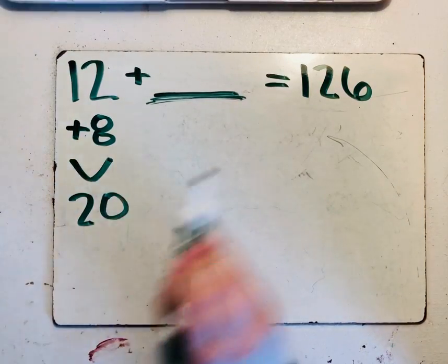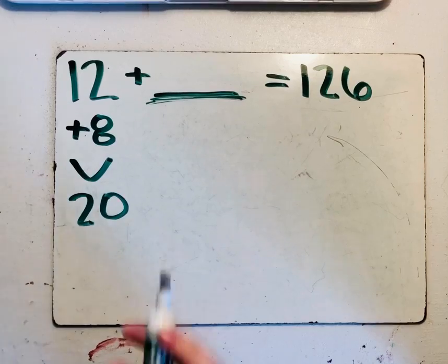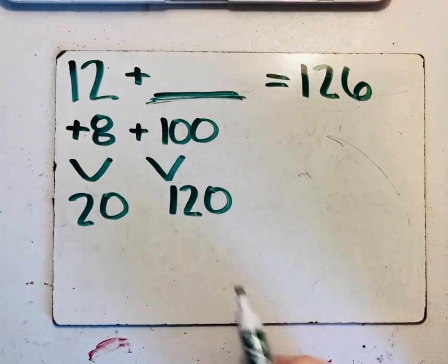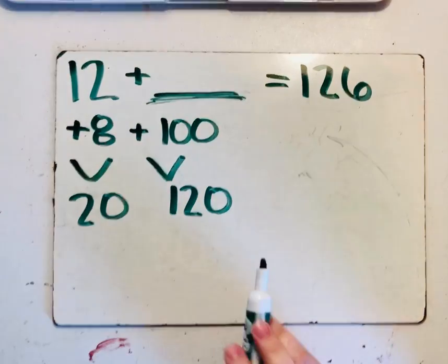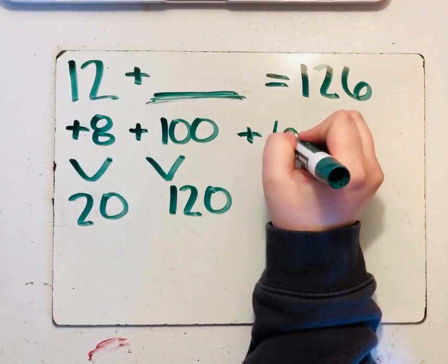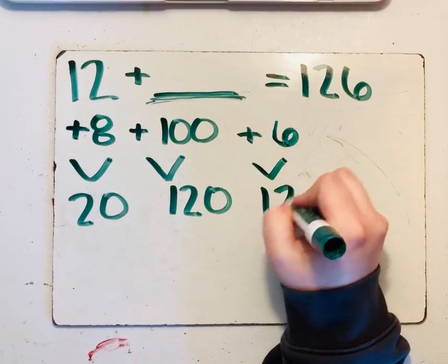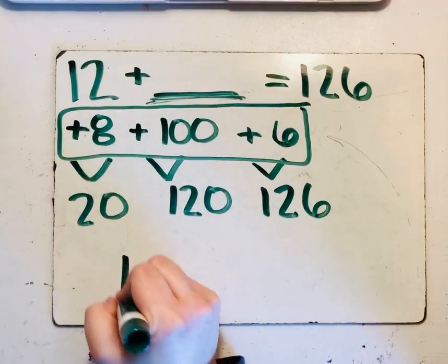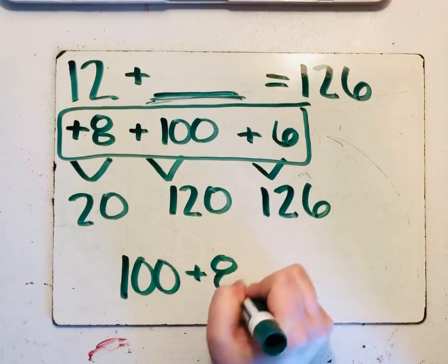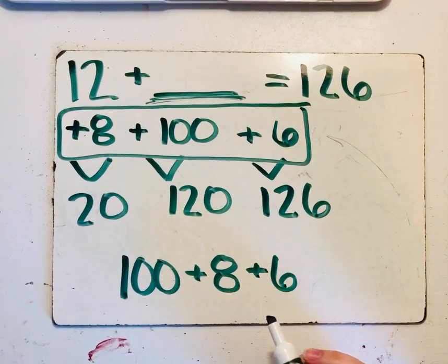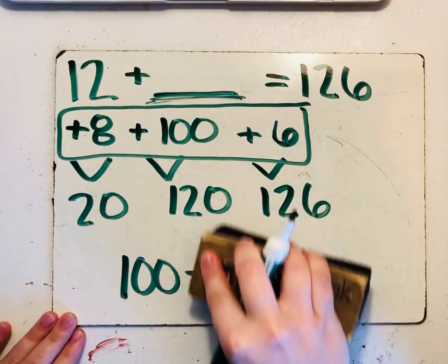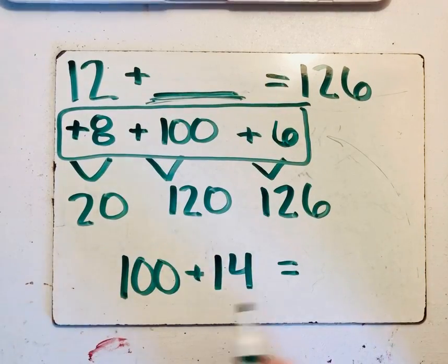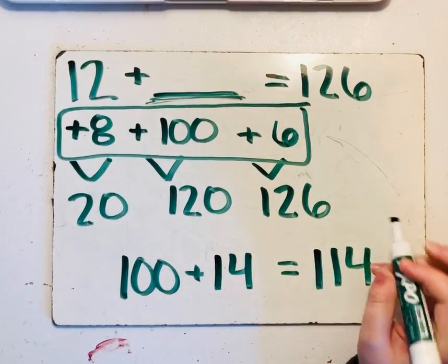What can we add to 20 to get closer to 126? We can add a whole 100. That gives us 120. What can we add to 120 to get to 126? Good. We can add a 6. And that gets us to 126. But we're not done yet. We need to add all of these together. So we have 100 plus 8 plus 6. And we know that 8 plus 6 is 14. So 100 plus 14 equals 114 ducks.